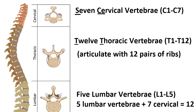Next you have the thoracic region, which consists of 12 thoracic vertebrae abbreviated as T1 through T12. It's easy to remember there are 12 thoracic vertebrae because they articulate with the 12 pairs of ribs to form part of the thoracic cage — and both 12 and thoracic start with the letter T.